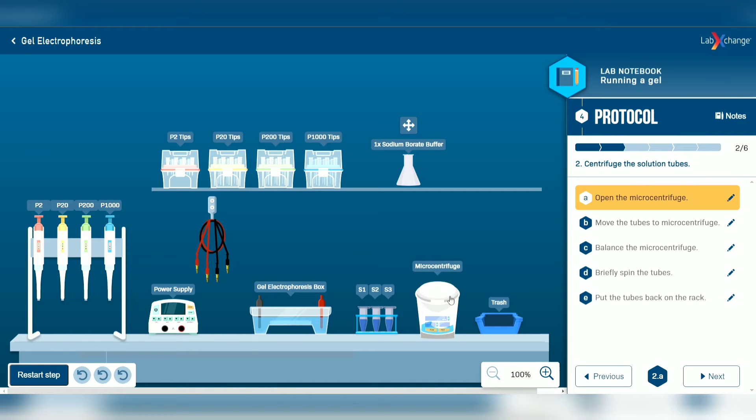Now open the microcentrifuge. Move all the tubes, the S1, S2, S3 tubes into the microcentrifuge.